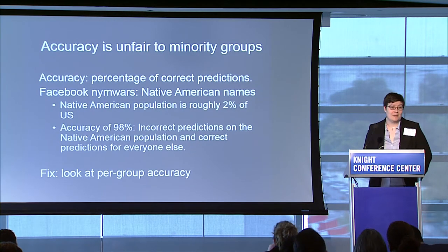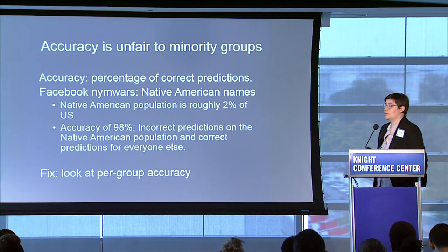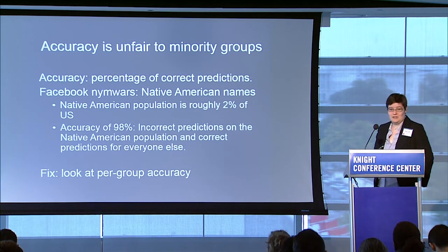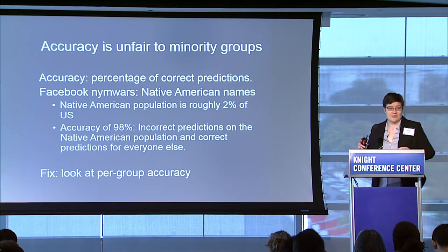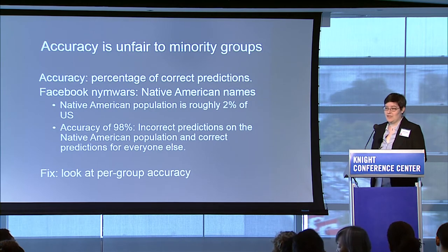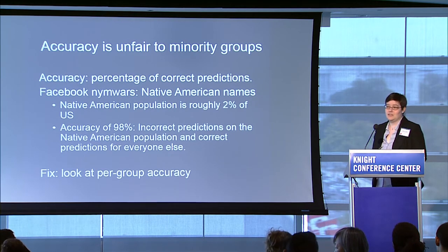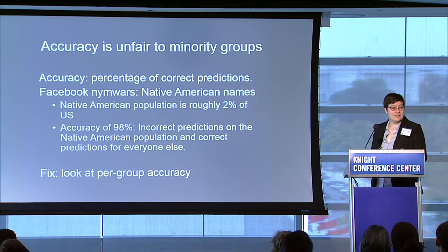One of the unfortunately common methods of evaluating these algorithms is based on accuracy — the percentage of correct predictions. To give an example: Facebook has been going through this whole thing with NimWars, where Native Americans have been finding that their names are not classified as real. Let's say hypothetically that an algorithm is making this determination. We could see how that algorithm might end up seeming good to Facebook. Because the Native American population is about 2% of the US population, Facebook could potentially give the incorrect answer for every single Native American name and still have 98% accuracy. And Facebook would say, '98% — that sounds pretty good.'